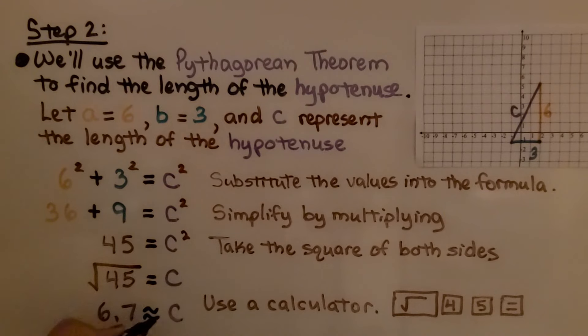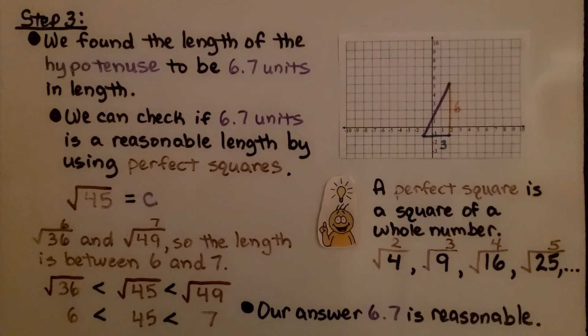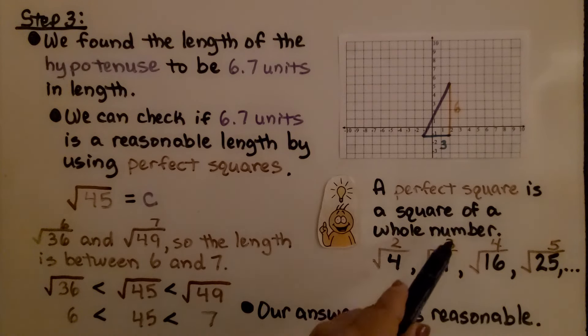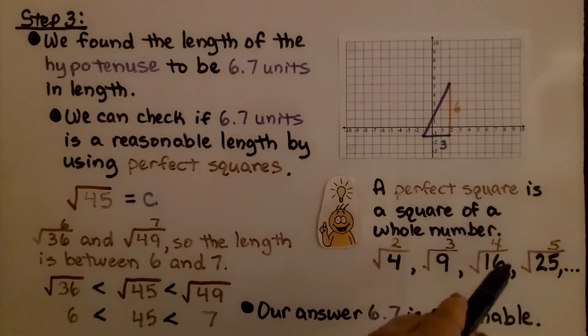For step 3, we check for reasonableness. We found the length of the hypotenuse to be 6.7 units in length. We can check if 6.7 units is a reasonable length by using perfect squares. A perfect square is a square of a whole number. 2 is the square of 4, 3 is the square of 9, 4 is the square of 16, and 5 is the square of 25.